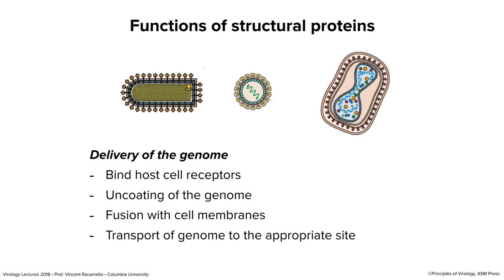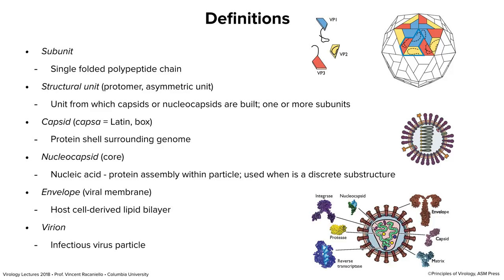Today we're going to be concerned with how to make a virus particle. But before we do, let's talk about definitions to make sure we're on the same page. First, we have subunit. A subunit of a virus particle is a single polypeptide chain. Here on the right is a poliovirus and its subunits are colored differently: red, blue, yellow. They're called VP1, VP2, and VP3. VP is a widely used name in virology for virion proteins.